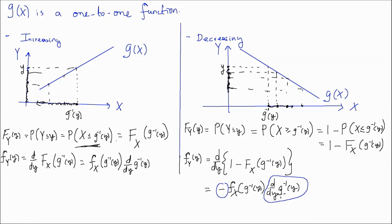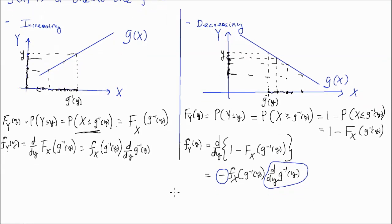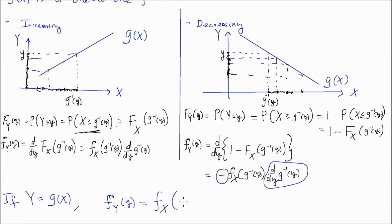In general, I can combine the increasing and decreasing cases with the following formula. If the random variable y is given by g of x and g of x is a one-to-one function — whether decreasing or increasing — then f_y of little y equals the PDF of x evaluated at g inverse of y, multiplied by the absolute value of the derivative with respect to y of g inverse of y. This quantity is what we call the Jacobian, and it comes up again in bivariate or trivariate transformations.